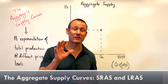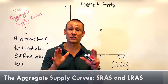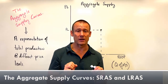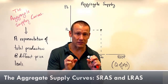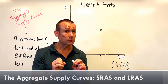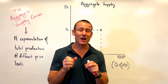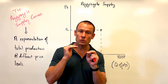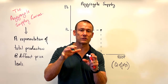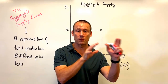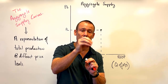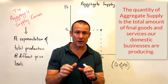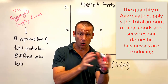Hey everybody, in this video we're talking about aggregate supply. Let's talk about what aggregate supply actually is — it's just talking about total production. Aggregate supply represents the total amount of final goods and services our domestic businesses are producing. That's what aggregate supply is — it's representing total production.